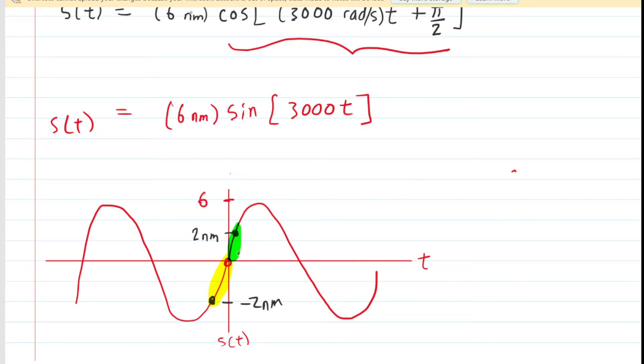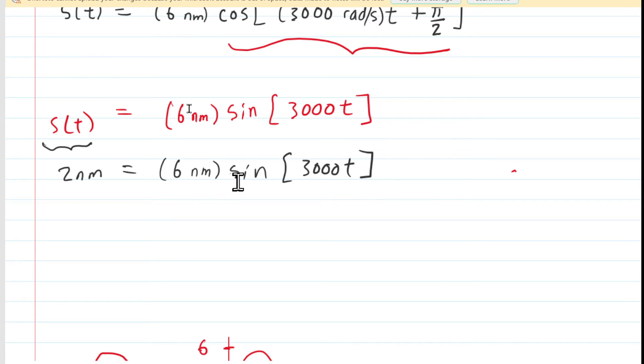So again, we're going to try to find the time required to go from t equals 0 up to a position of 2 nanometers. So that means for this position here, we're going to fill in positive 2 nanometers and then try to solve for time t. So to do that, to solve for t, we'll divide both sides by 6.